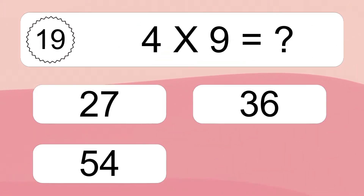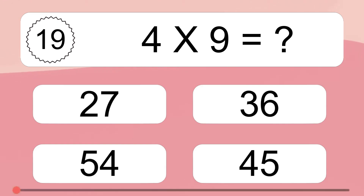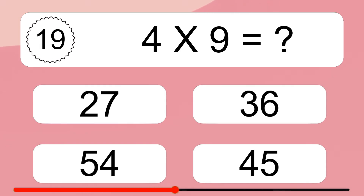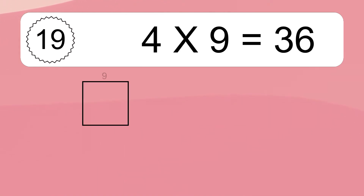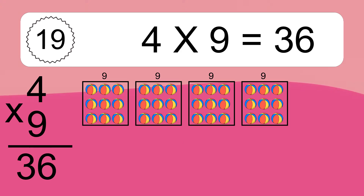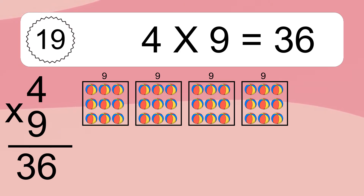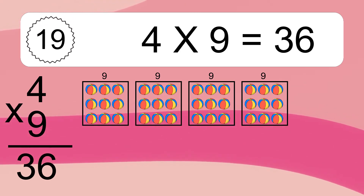4 times 9 equals what? 4 times 9 equals 36. We have 4 boxes, and each box has 9 colorful balls inside. If you count all the balls in all the boxes together, you will have 4 times 9 balls. This equals 36 balls.